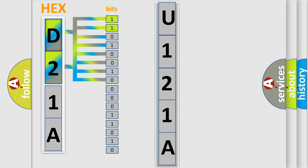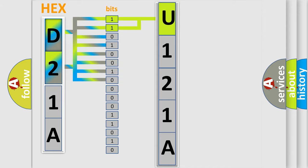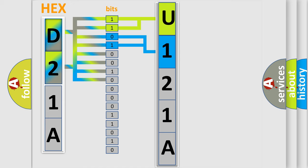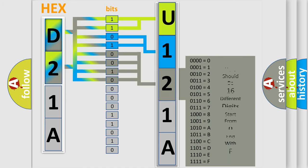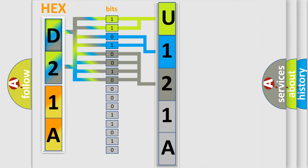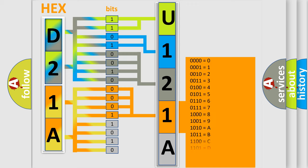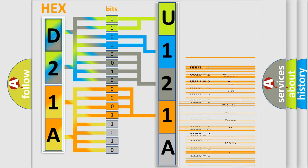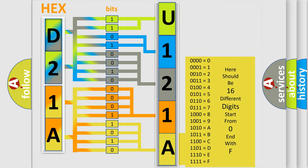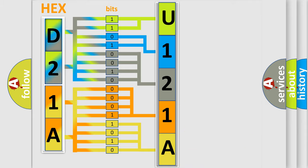By combining the first two bits, the basic character of the error code is expressed. The next two bits again determine the second character. The last bit styles of the first byte define the third character of the code. The second byte is composed of a combination of eight bits. The first four bits determine the fourth character of the code, and the combination of the last four bits defines the fifth character. A single byte conceals 256 possible combinations. We now know in what way the diagnostic tool translates the received information into a more comprehensible format.